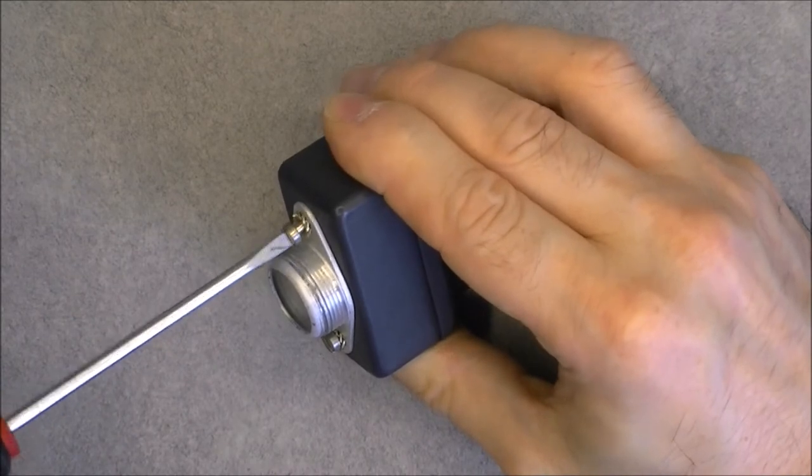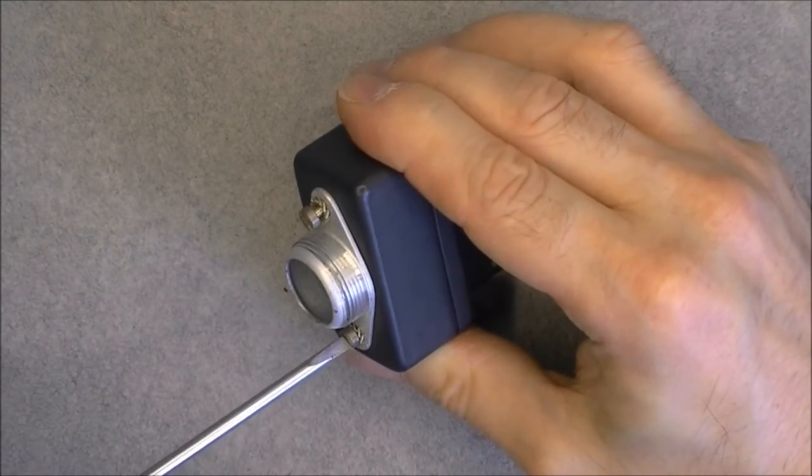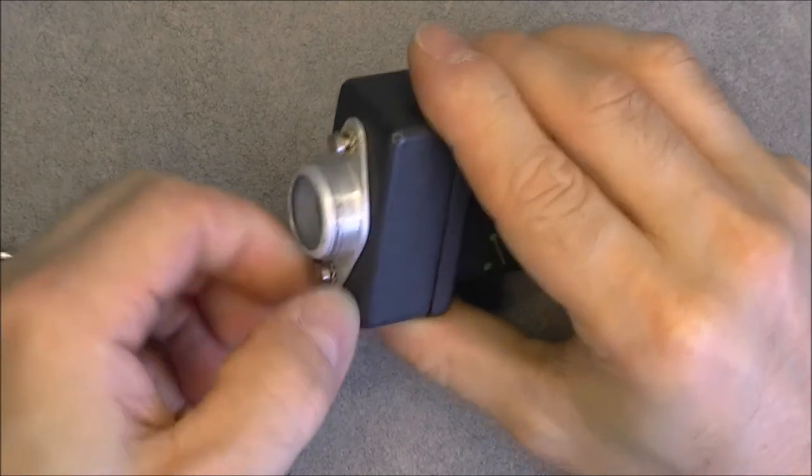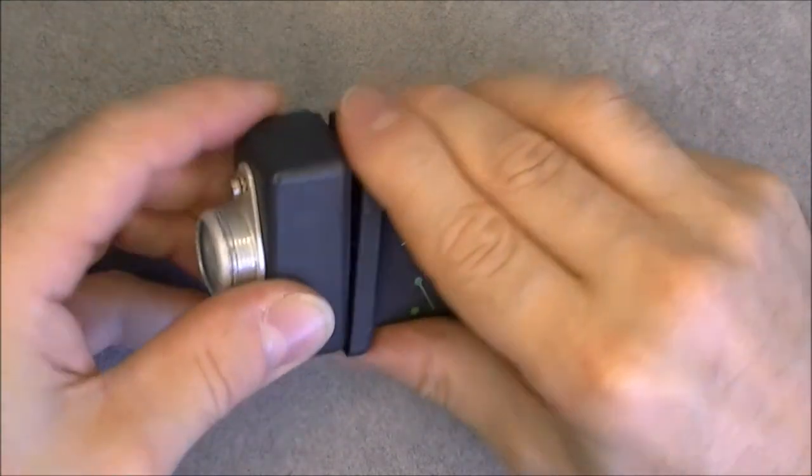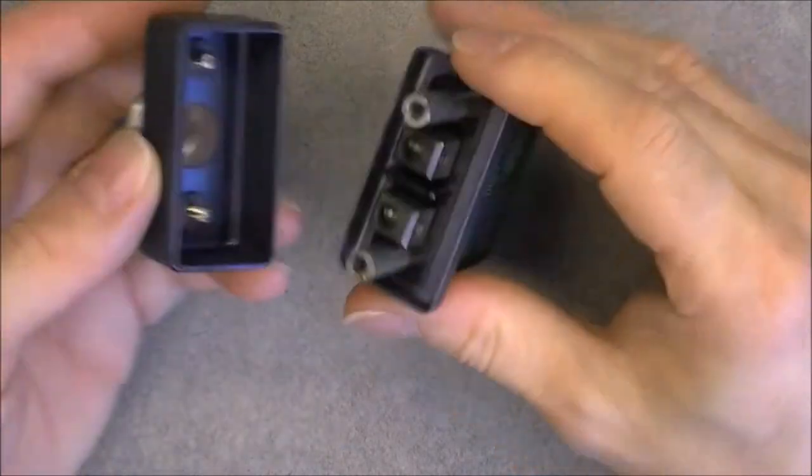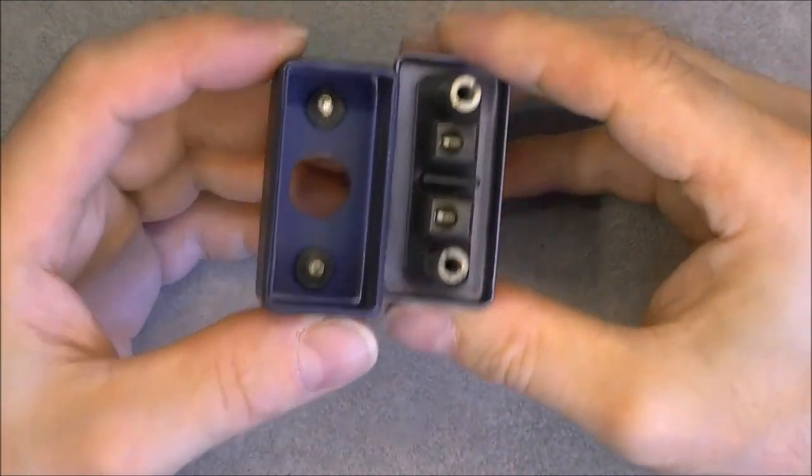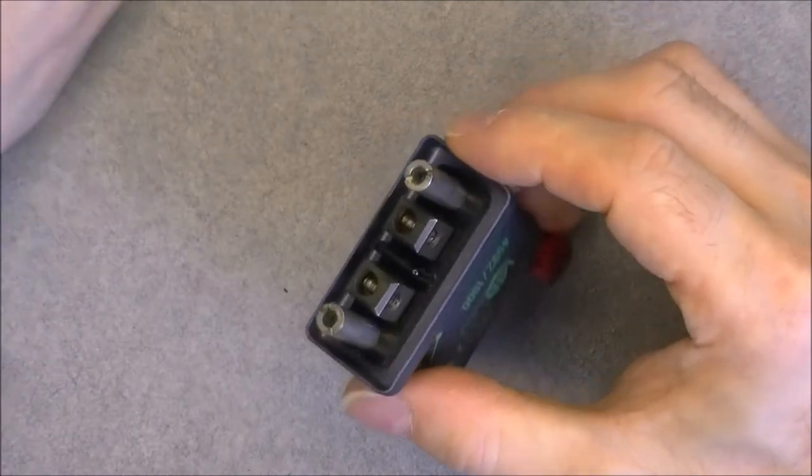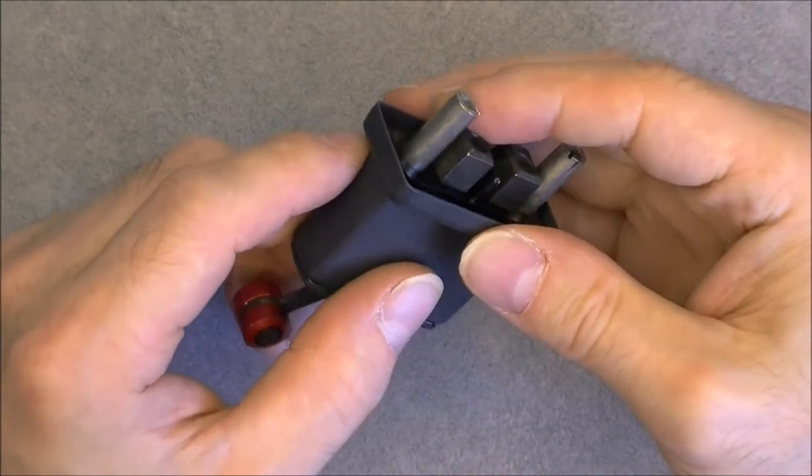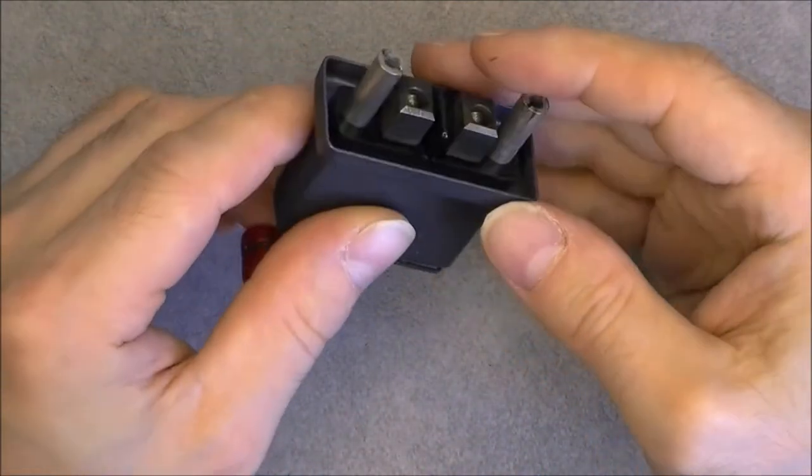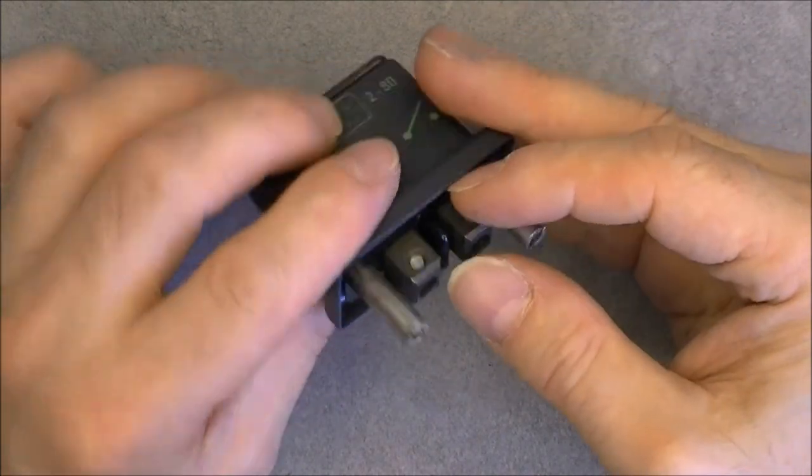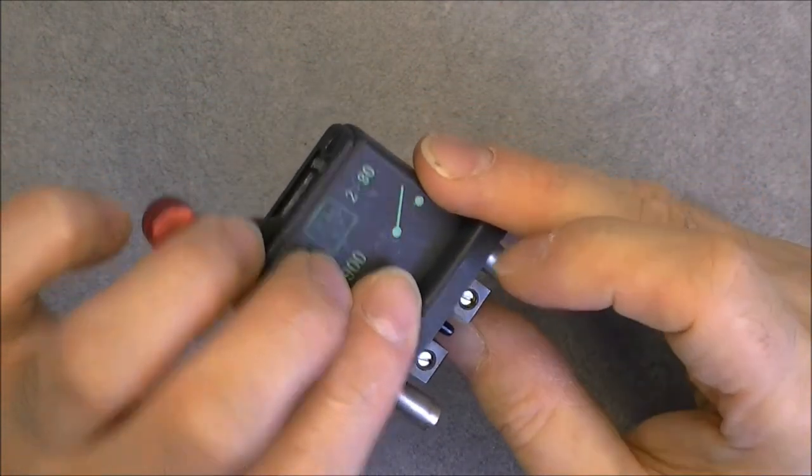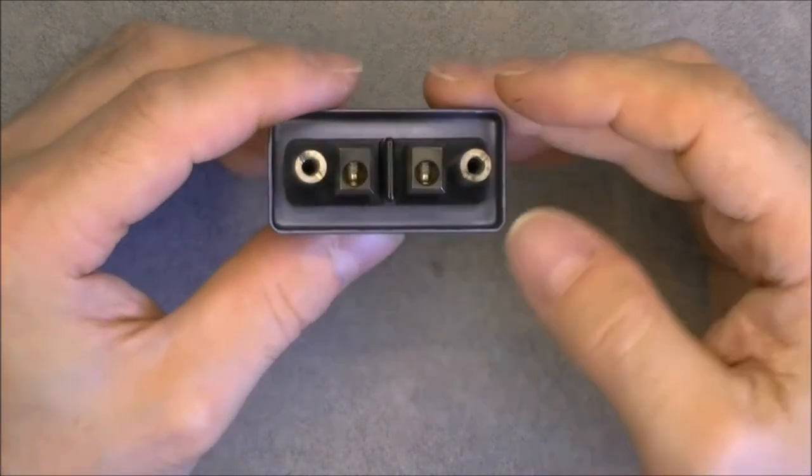We will just loosen screws. Really nice construction. Here we are. So captive screws here. The terminals seem to be brass probably. They are a little bit darkened or maybe they are silver coated actually. Here you are.